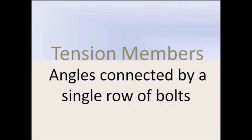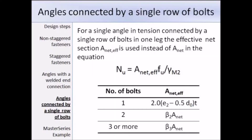This next section deals with angles connected by a single row of bolts. In most cases angles are connected by one leg only and this can introduce eccentric loading. For a single angle in tension connected by a single row of bolts in one leg, the effective net section A_net,eff is used in place of the net area A_net in the equation NU equals A_net times FU. A_net,eff is dependent on the number of bolts and the pitch P1. Here's a table showing you how to work out the effective net area, and you might notice these beta terms.